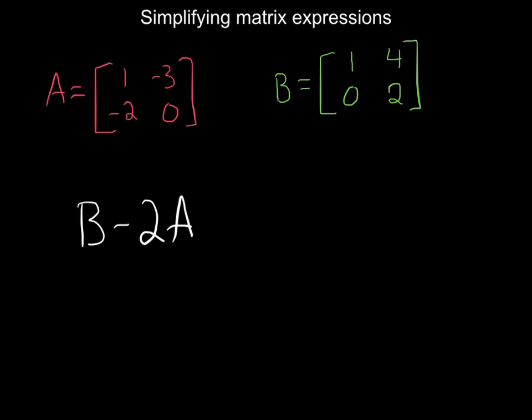Now, we have two different types of matrix mathematics in here. We have subtraction of two matrices, but before we do that, we have a scalar multiplication. So we have two times the matrix A. So let's go ahead and set this up.